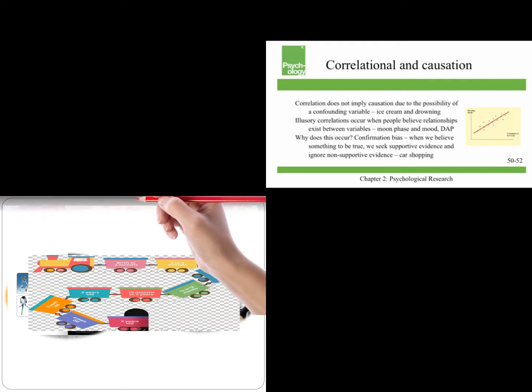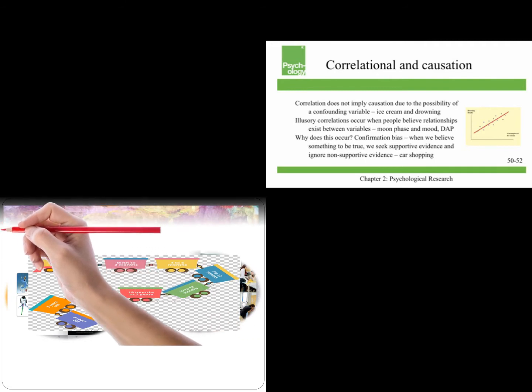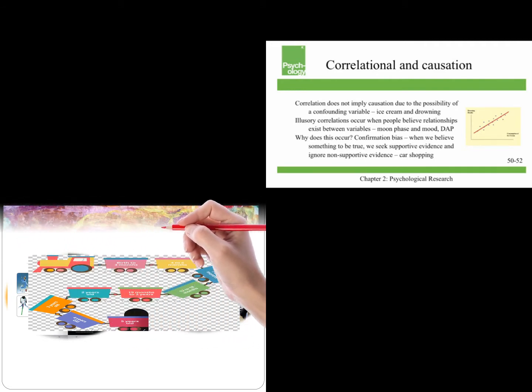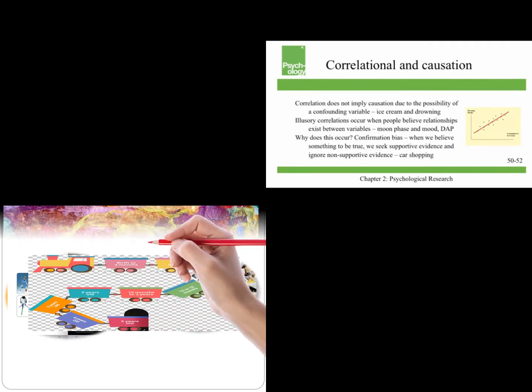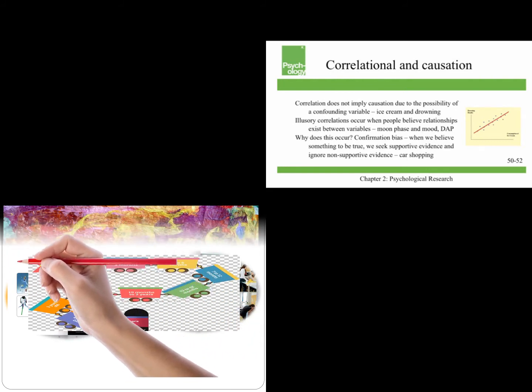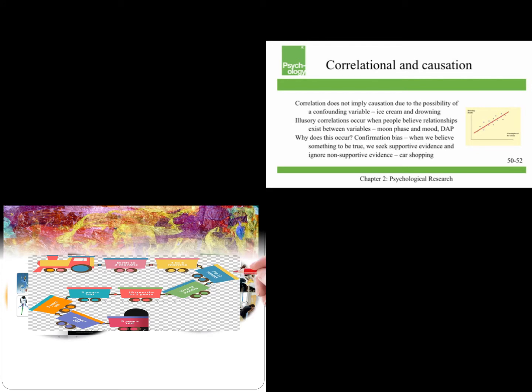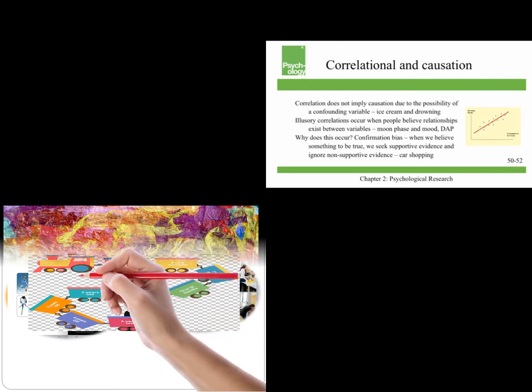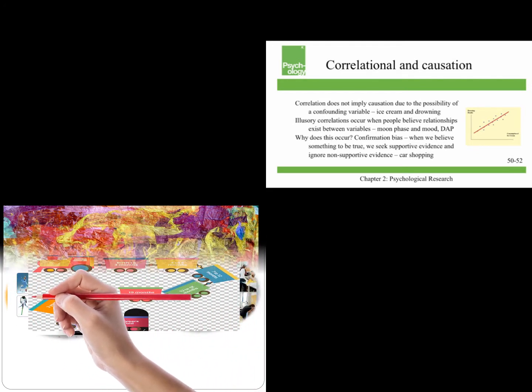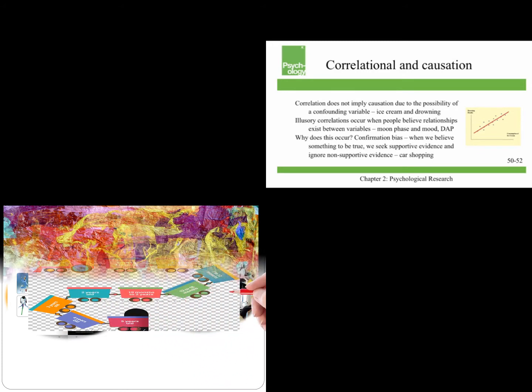And the DAP is the draw person test, which is also an illusory correlation. I always remember an illustrative Peanuts cartoon where Charlie Brown tells Linus that he drew his hands behind his back because he's insecure. And Linus says, no, it's because he can't draw hands. That's illusory correlation.